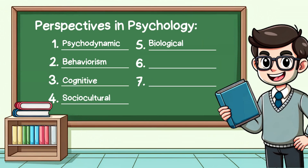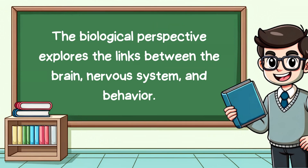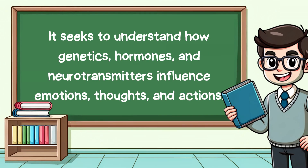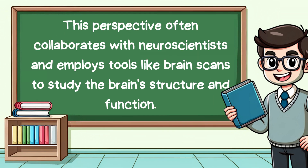Fifth, we have the biological perspective. This viewpoint explores the links between the brain, nervous system, and behavior. It seeks to understand how genetics, hormones, and neurotransmitters influence emotions, thoughts, and actions. This perspective often collaborates with neuroscientists and employs tools like brain scans to study the brain's structure and function.